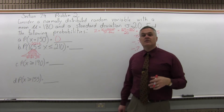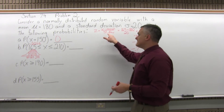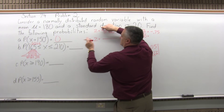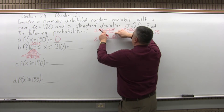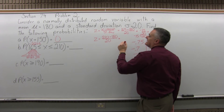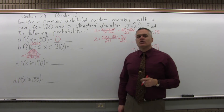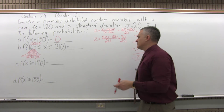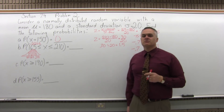Now for 210, using the same formula: Z = (210 − 180) / 20. On top, 210 minus 180 is positive 30, with 20 underneath. Pay attention to the positive sign. 30 over 20 reduces to 3 halves, which is 1.5. Or on your calculator, 30 divided by 20 equals 1.5.